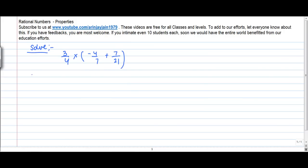Now I will tell you about one of the properties of rational numbers. For any rational numbers A, B, C: A into B plus C is equal to A into B plus A into C. This is also called as the distributivity of multiplication over addition.